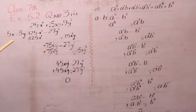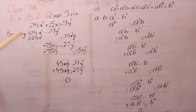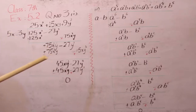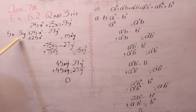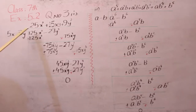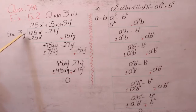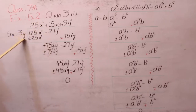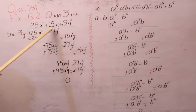यहां पर जो major mistake करते हैं वो इसी से multiply करके values को छोड़ देते हैं। नहीं बेटा — इसके साथ आगे जितनी भी values होंगी, जितनी भी terms आ जाएंगी, 1, 2, 3 — उनको भी इस value के साथ multiply करके लिखना जरूरी है। तो जब आप इसको इससे multiply करेंगे तो answer बनेगा 75x की 2 और y। यहां x की 2y की value ऊपर available नहीं है।